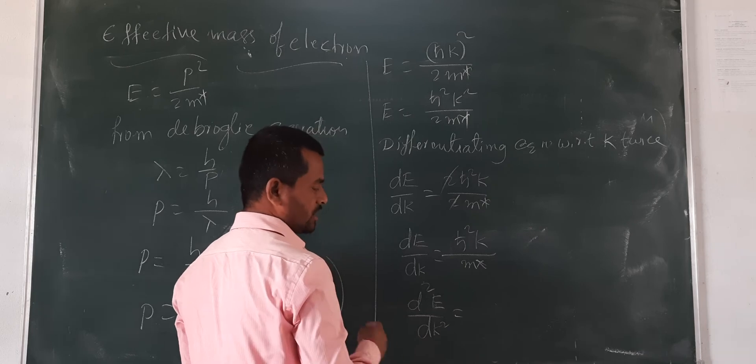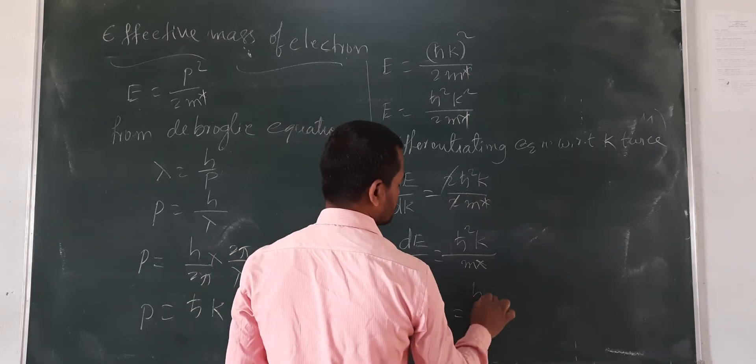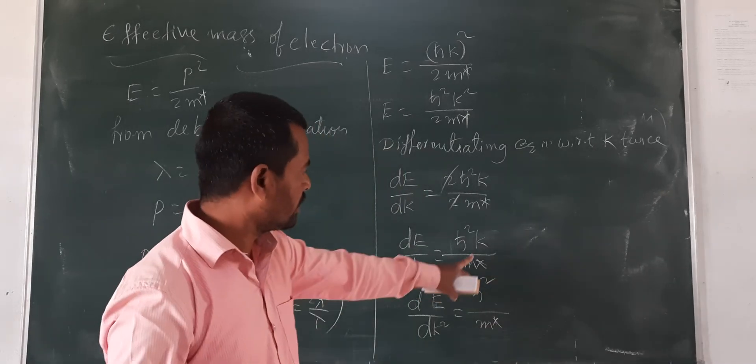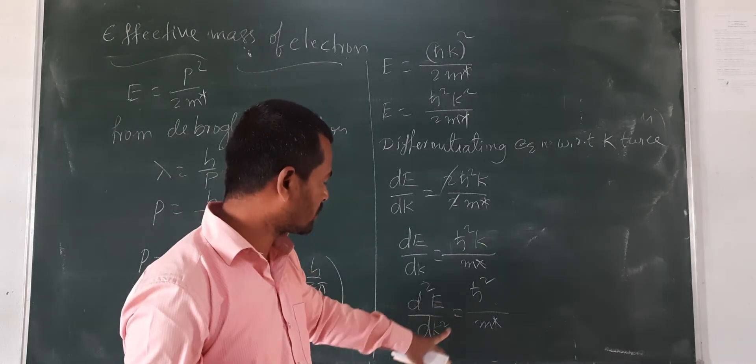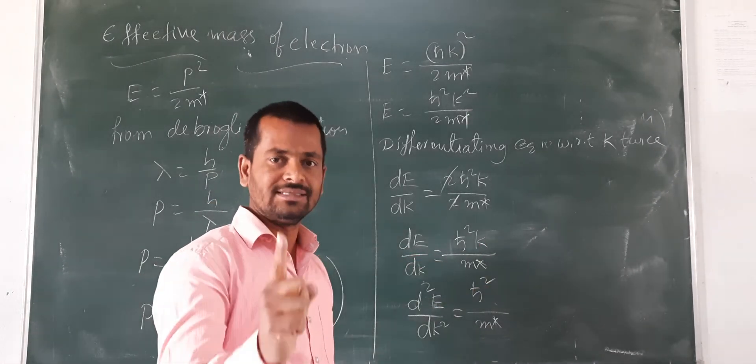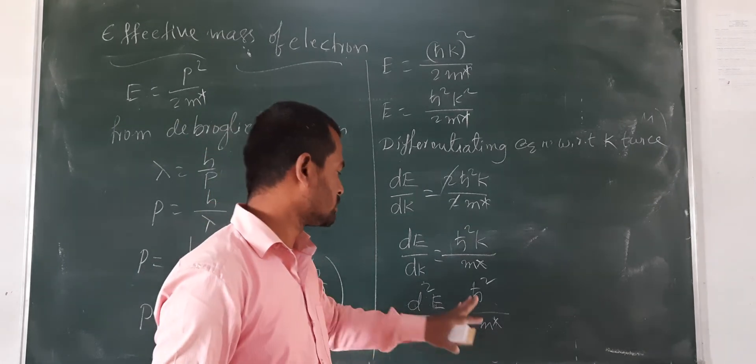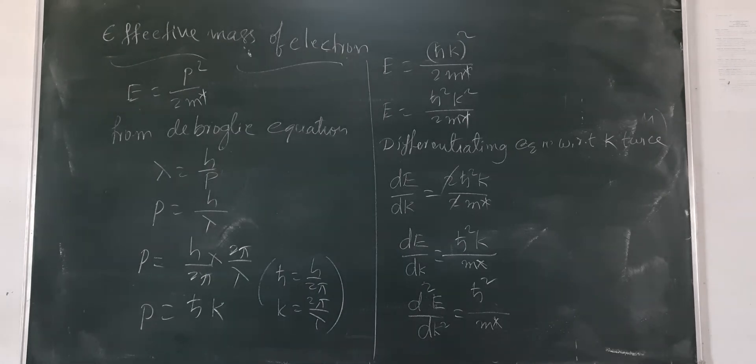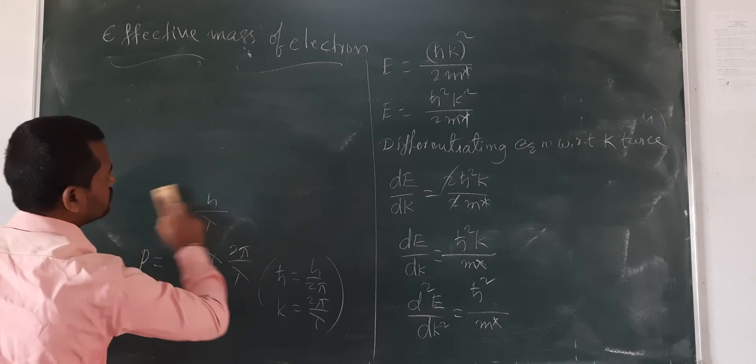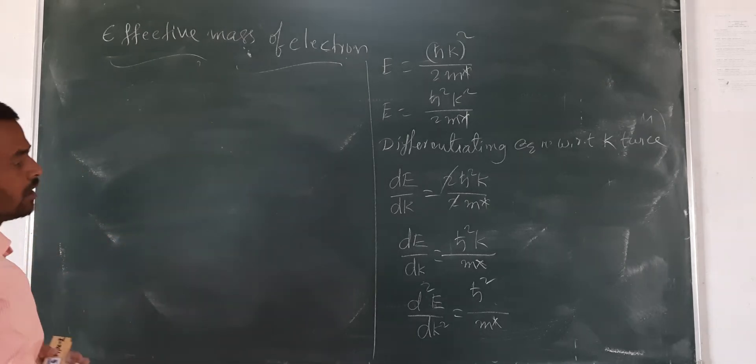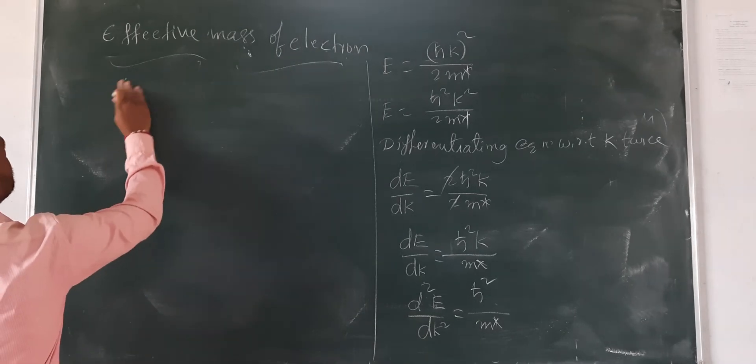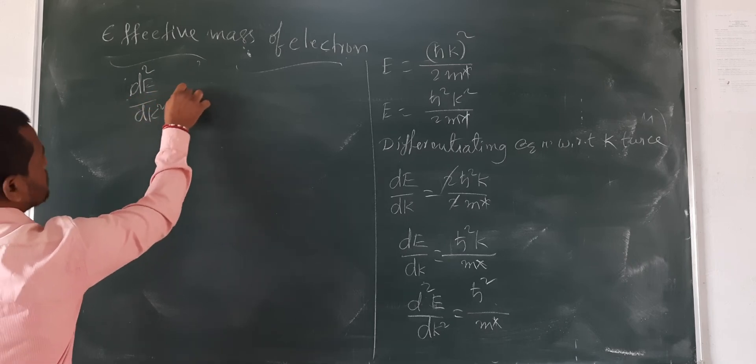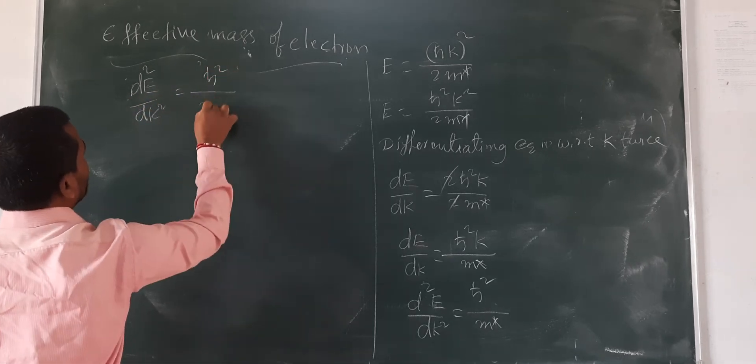Again differentiating once again, d squared E by dk squared. H-cut squared by m, and k differentiation is 1 with respect to k. So d squared E by dk squared equals h-cut squared by m.